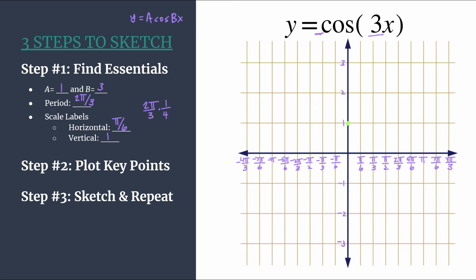This is where our scale label setup really comes in handy because all of our key points will align with our labeled tick marks. We have a maximum, a 0 at the first tick mark, a minimum which just has a y coordinate that's the opposite of a, so in this case it's negative 1, and then another 0.